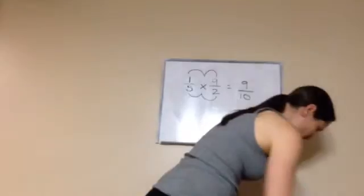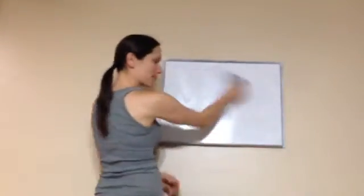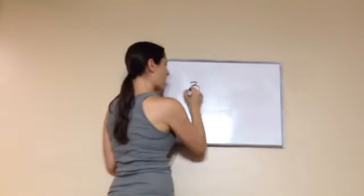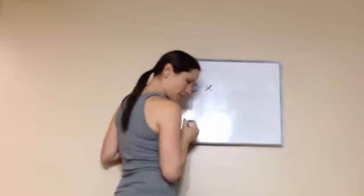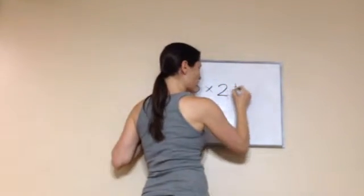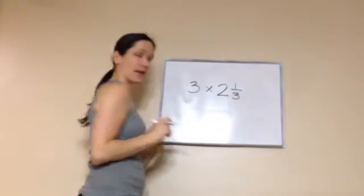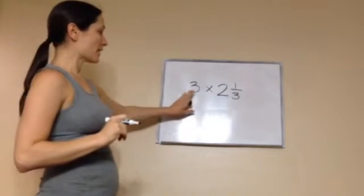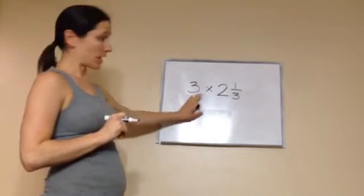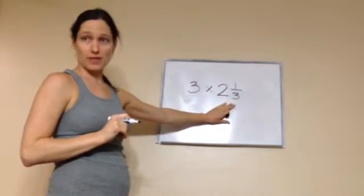Let's try another one. That's our last problem for the year. Yay! We get three whole number times two and one-third. We need to make this one into a fraction and this one into a fraction instead of a mixed number.